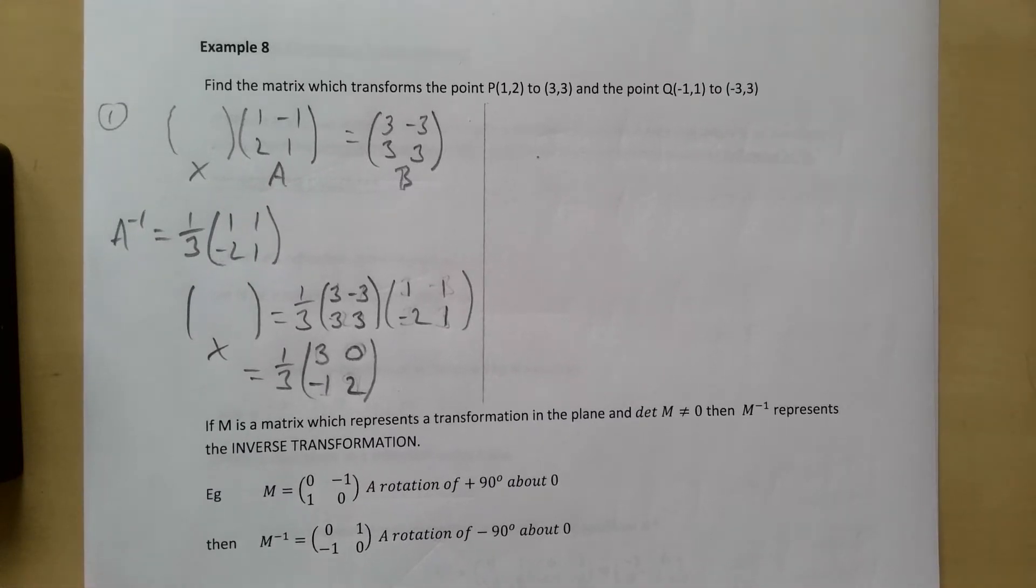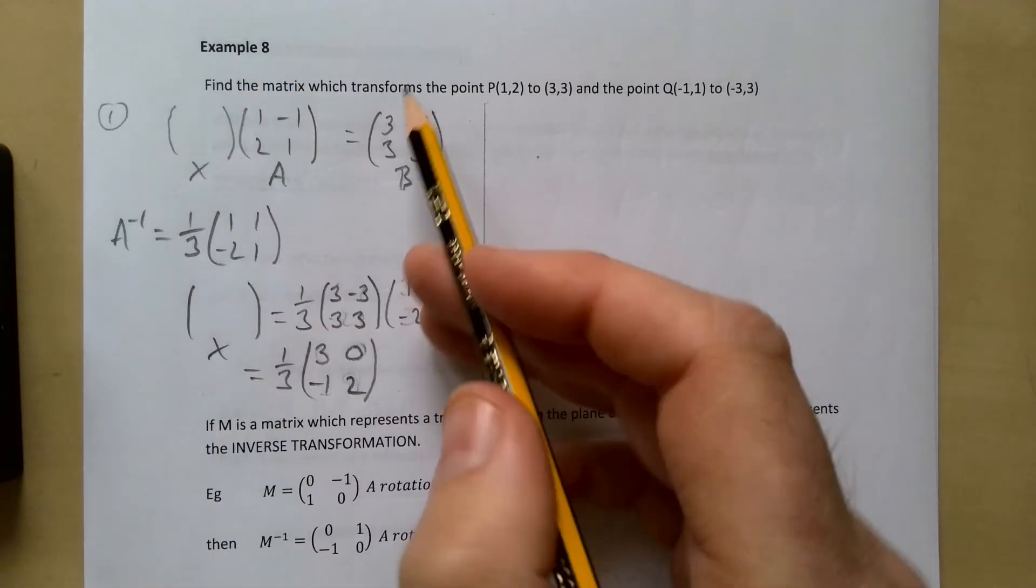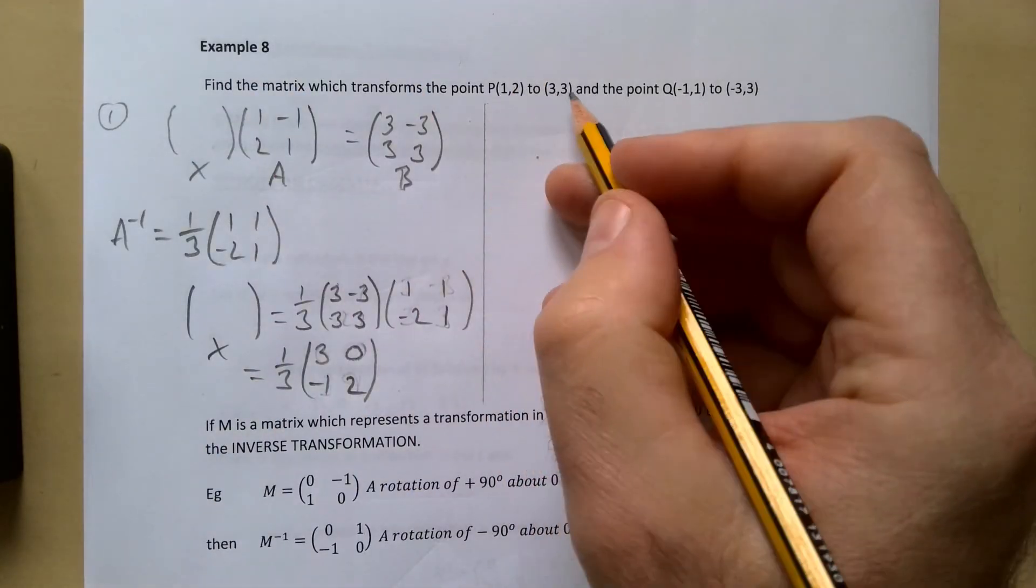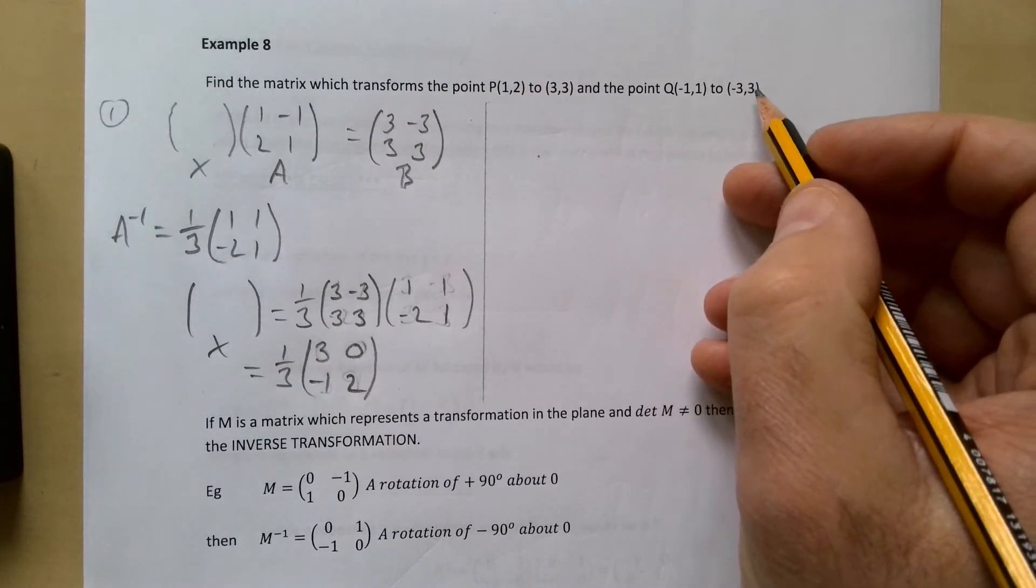Okay, this is AS Further Maths and we are looking at Unit 2 which is our matrices. We're looking at Example 8 and Example 9 here in the notes. Find the matrix which transforms the point (1,2) to (3,3) and the same matrix transforms (-1,1) to (-3,3).